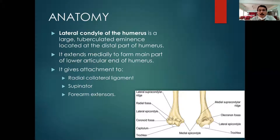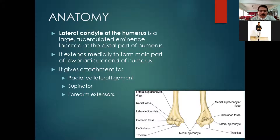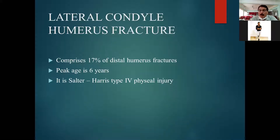The lateral condyle extends medially to form the main part of the humerus and is essentially part of the joint for its formation. It also has attachment to the radial collateral ligament. The lateral condylar fracture comprises 17 percent of all distal humerus fractures.